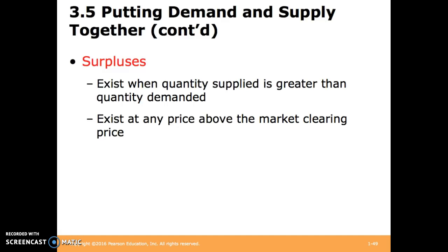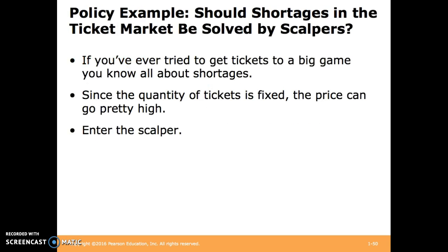Conversely, surpluses exist when quantity supplied is greater than quantity demanded, at any price above the market clearing price. At such a price, people demand less than the market clearing quantity while suppliers supply more. A relatable example: if you've tried to get tickets to a big game, you know about shortages. Since the quantity of tickets is fixed, the price can go quite high. Most musicians choose to sell tickets below the equilibrium price, which gives scalpers the opportunity to buy tickets at that low price and resell them at the higher price the market will bear.